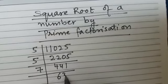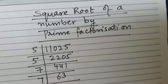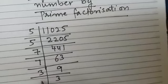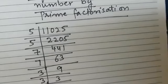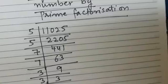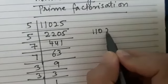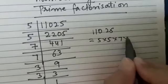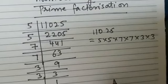Dividing by 7 we get 63. Again it is divisible by 7 — 7 nines are 63. Now it is divisible by 3, and 3 threes are 9. So we can write 11,025 is equal to 5 × 5 × 7 × 7 × 3 × 3.